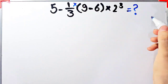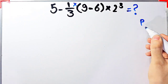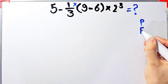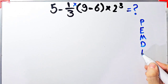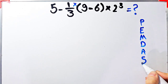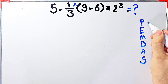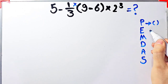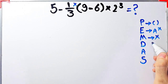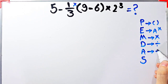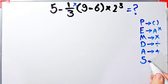To solve this question, we need to follow the order of operations, which is PEMDAS. PEMDAS shows the priority of the mathematical operations, and if you don't pay attention to this rule, you get the wrong answer. In this rule, P stands for parentheses, E stands for exponent, M stands for multiplication, D stands for division, A stands for addition, and S stands for subtraction.